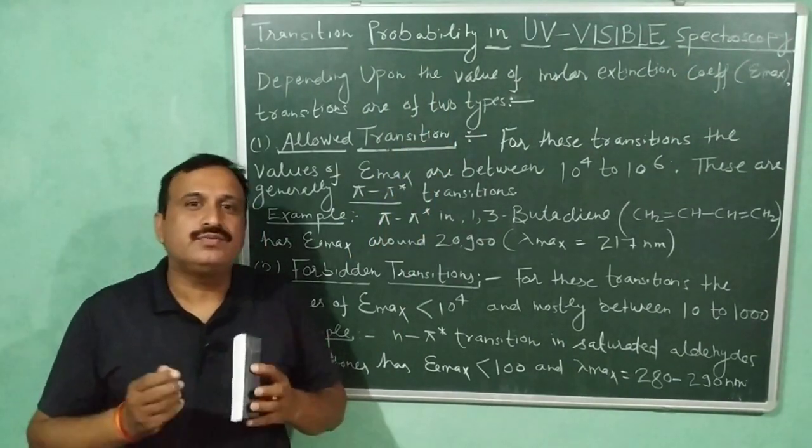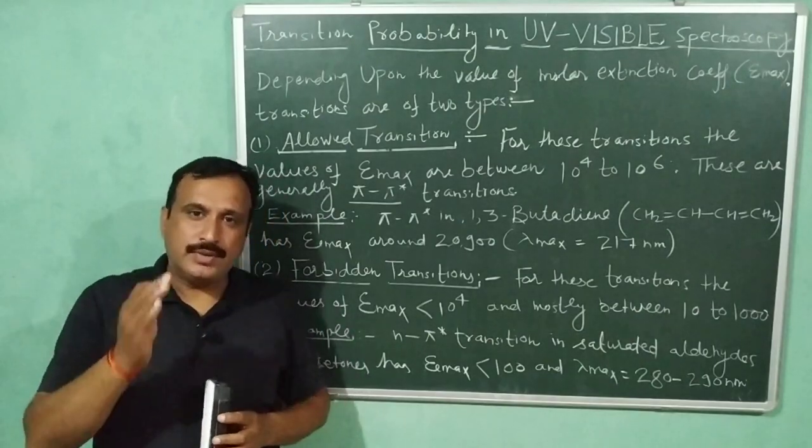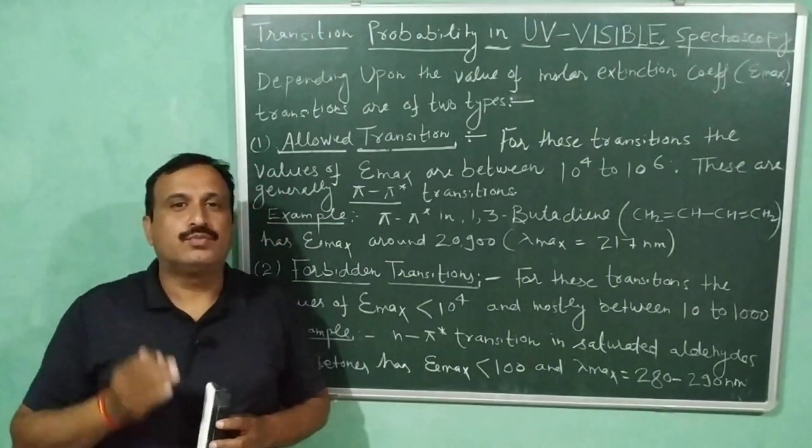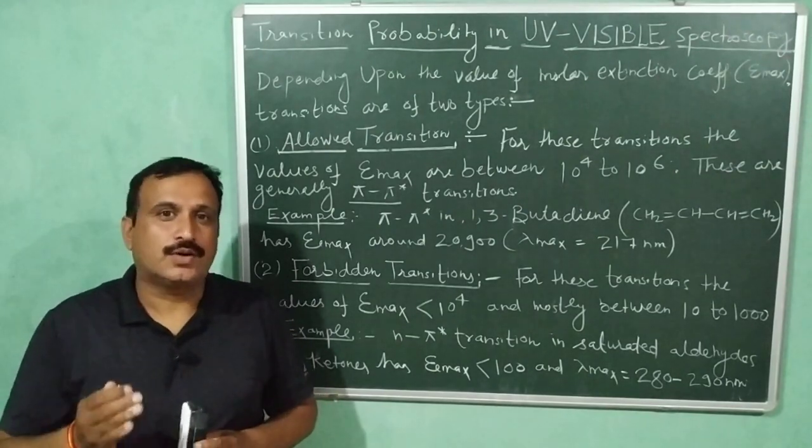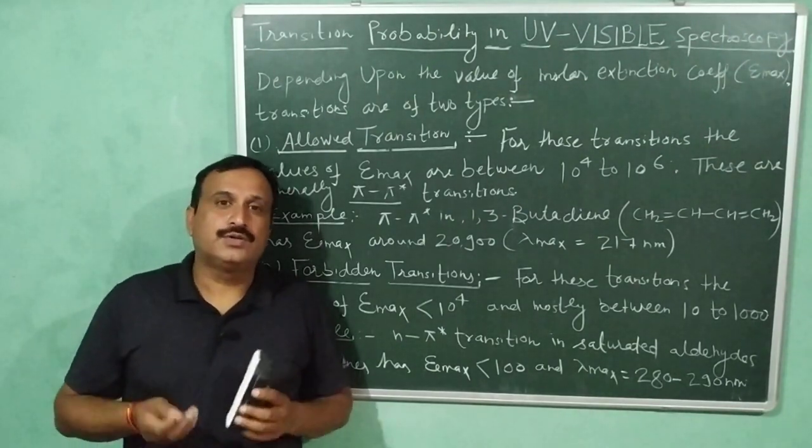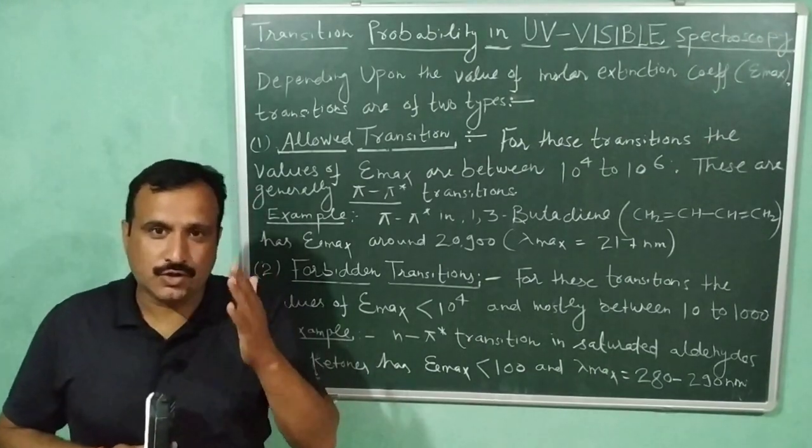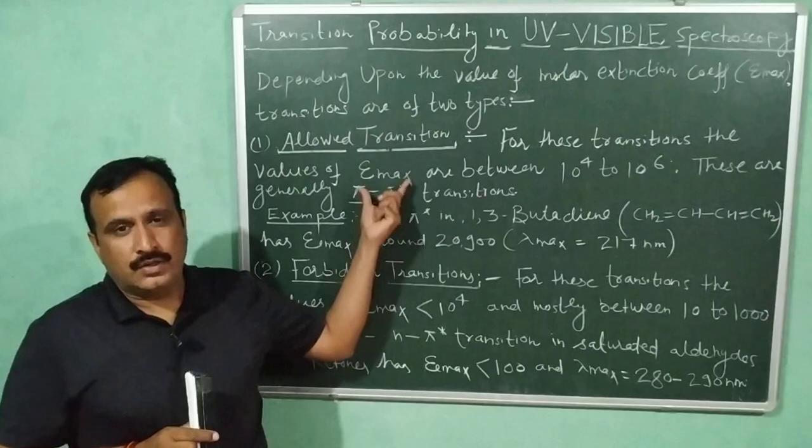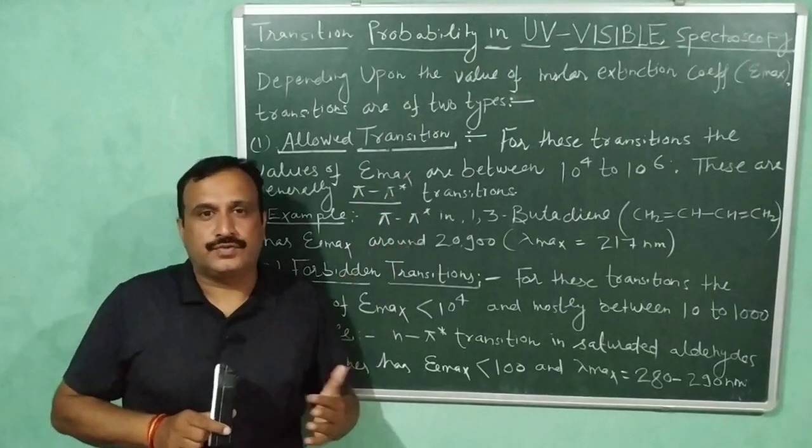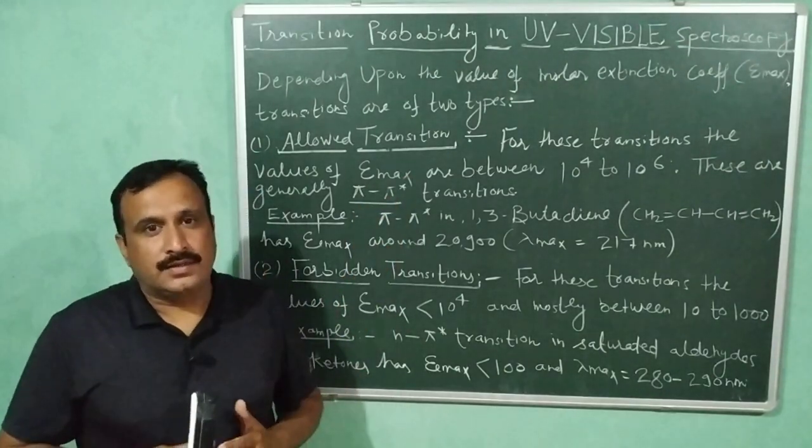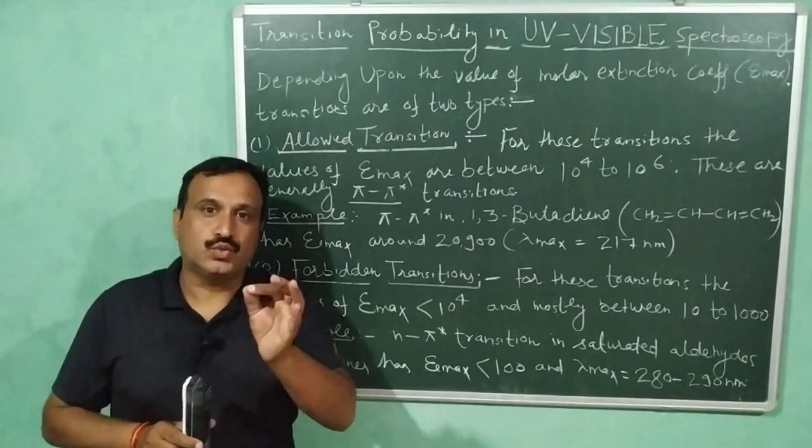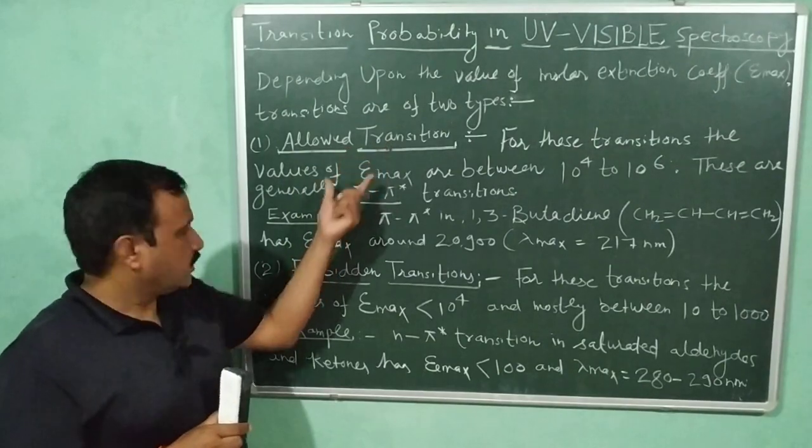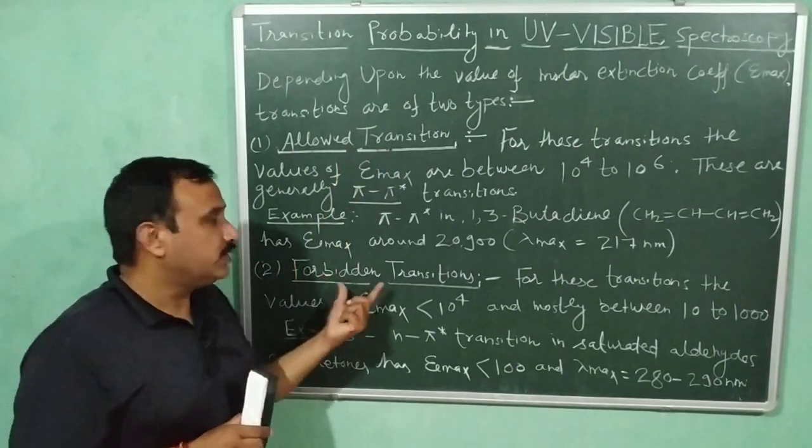So friends, in UV visible spectroscopy, the probability of a transition depends upon the value of molar extinction coefficient or molar absorptivity, represented by epsilon maximum. Depending upon the values of molar extinction coefficient, these transitions are classified into two types: allowed transition and forbidden transitions.